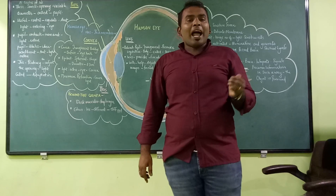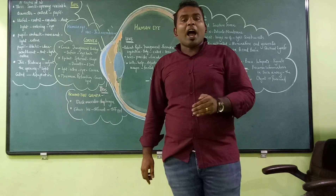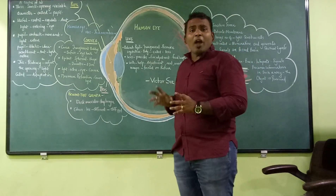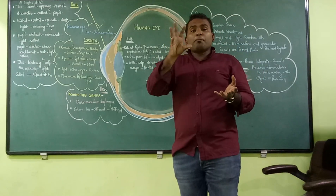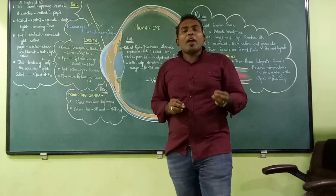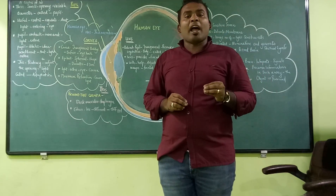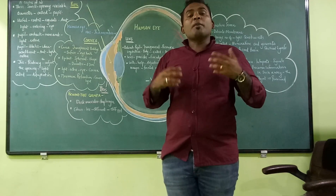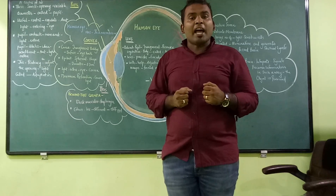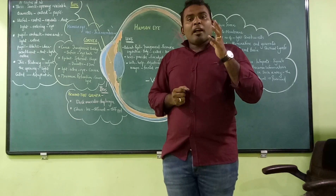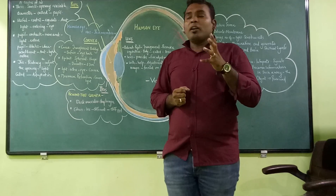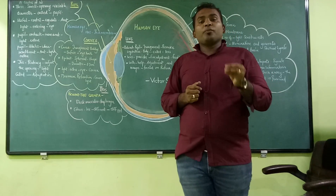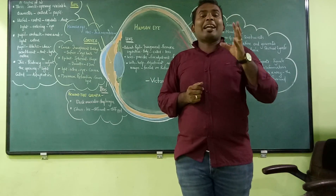The amount of light that enters your eye is controlled by the pupil. When you have more light entering the eye, the pupil contracts. When you have insufficient light entering the eye, the pupil dilates. This tendency of the pupil to adjust the opening for light is called adaptation.